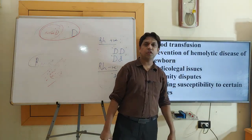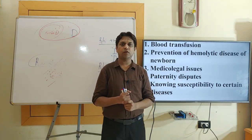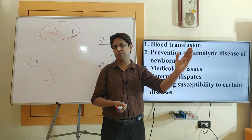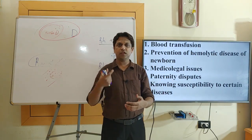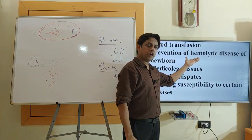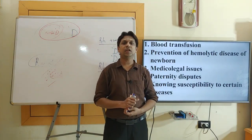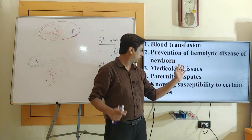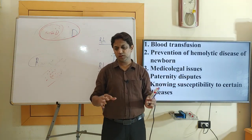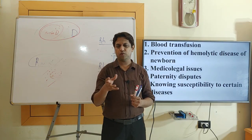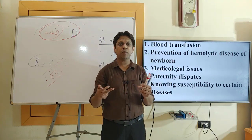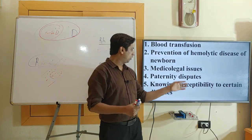Blood grouping is also helpful for prevention of hemolytic disease of the newborn, as already discussed—if we know the mother is RH negative and the father is RH positive, we can prophylactically give anti-D or RH immunoglobulin. In certain medico-legal issues, blood grouping is also helpful. For example, at a crime scene, blood stains on clothes can be typed and matched with the victim's blood type to establish a probable link.